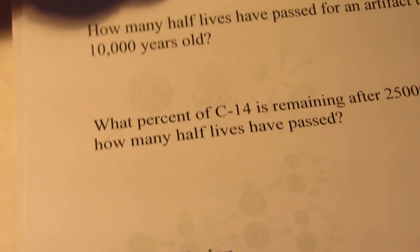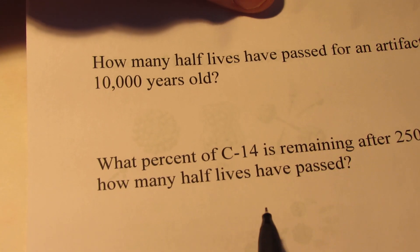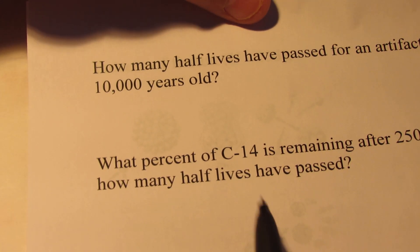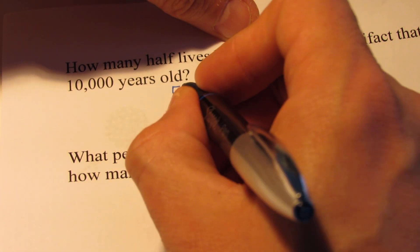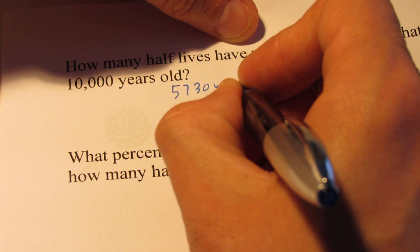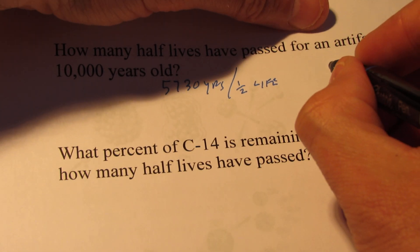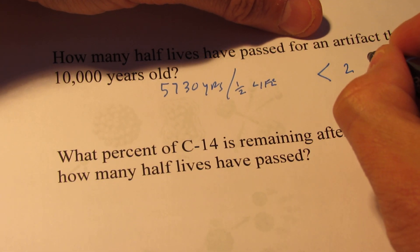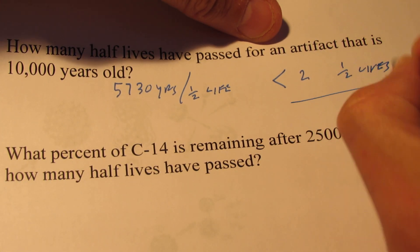If we found something we believe to be 10,000 years old, how many half-lives would it have gone through? Well, the half-life of carbon-14 is 5,730 years per half-life. That would be a little less than two half-lives for carbon-14.